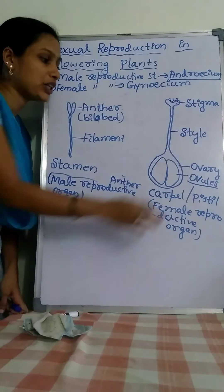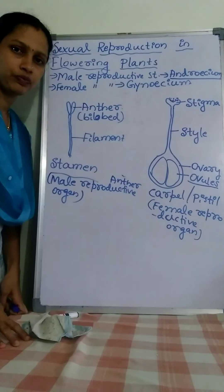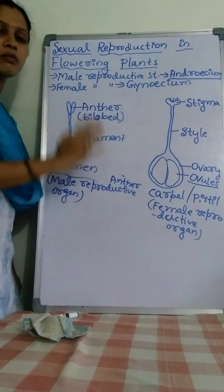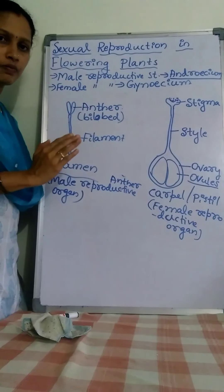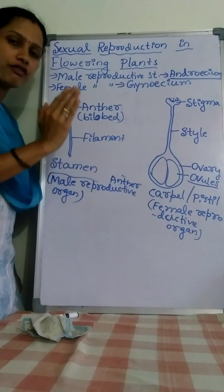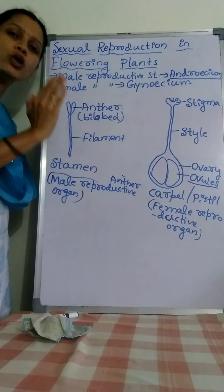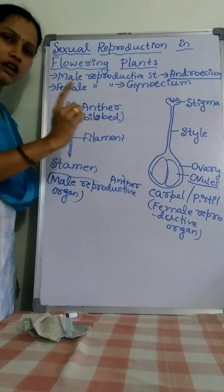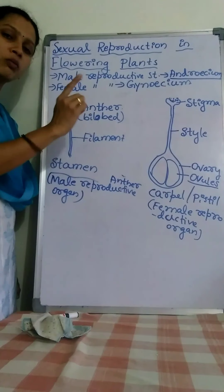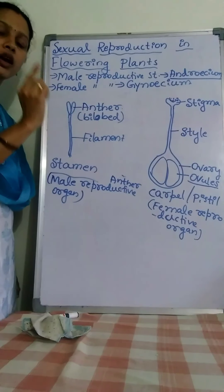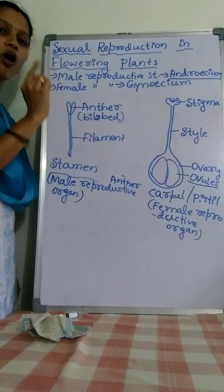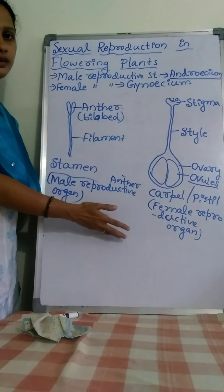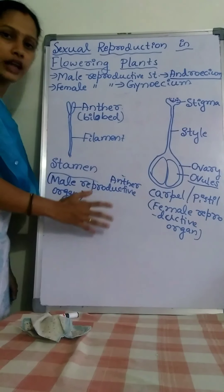This is about the structure of a bisexual flower. A bisexual flower is a flower having both sex organs — a single flower containing both male and female reproductive organs is called a bisexual flower. Thank you.